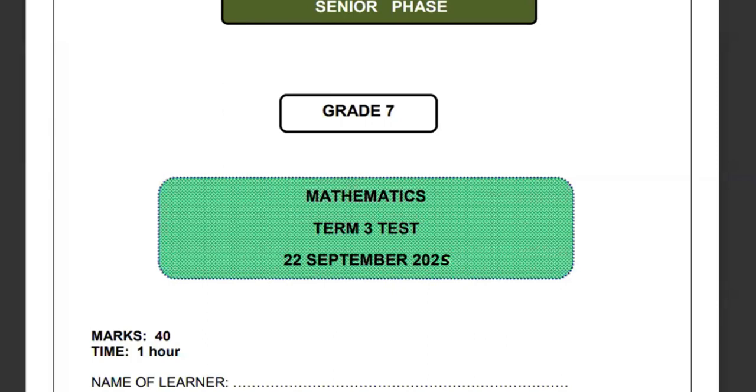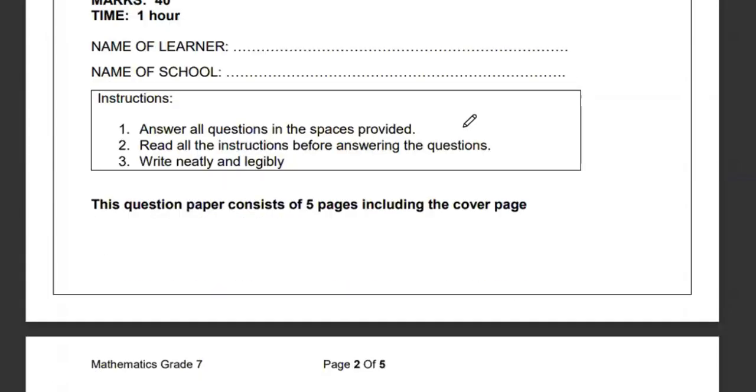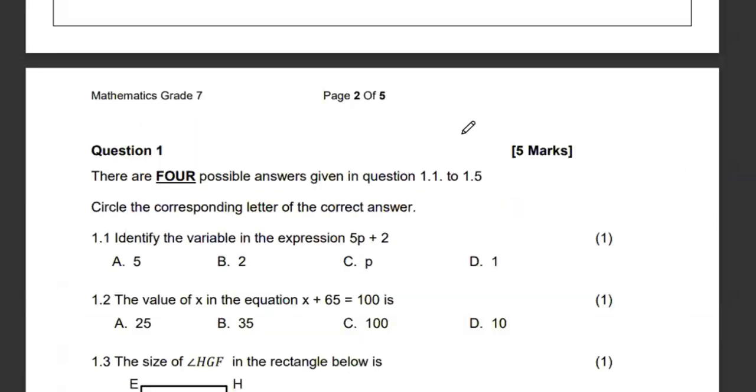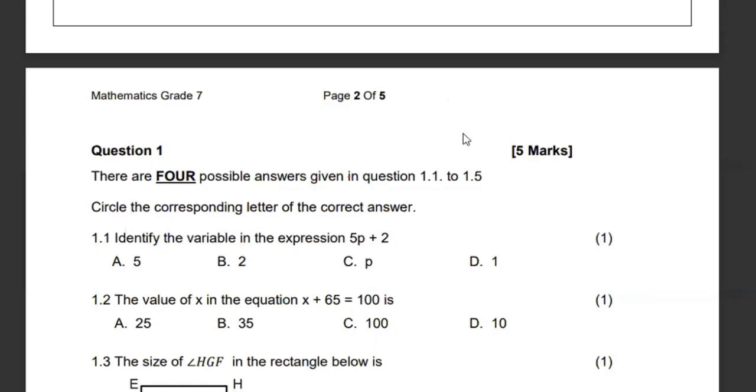Hello, welcome to yet another episode where we shall be looking at the proposed provision for the grade 7 mathematics term 3. This is a small paper out of 40 marks for one hour and we are expected to answer all the questions. For 1.1 to 1.5, circle the corresponding correct answer. We need to identify the variable within this expression. The variable is basically the letter, any letter of the alphabet within an expression. In this case we have p as the variable, 2 is the constant, and 5 represents the coefficient, the number that appears before a letter.